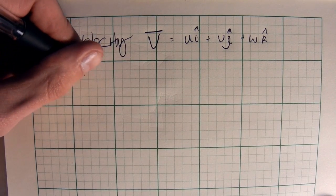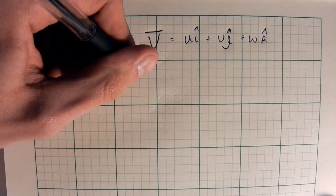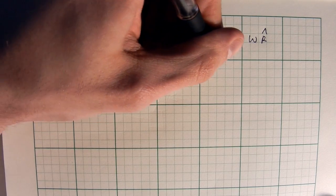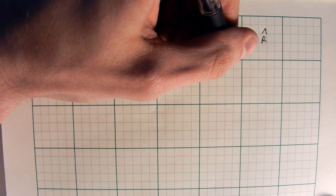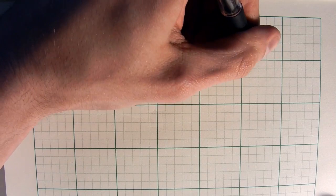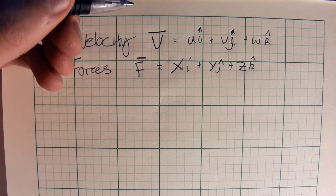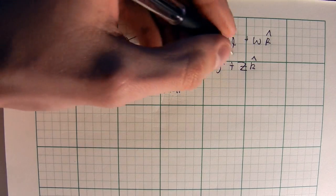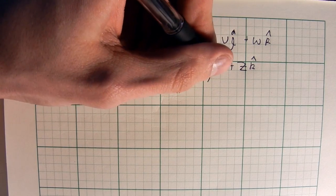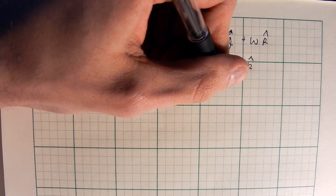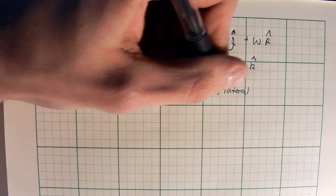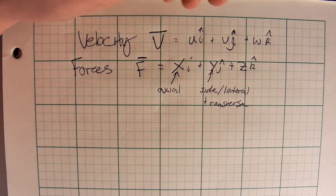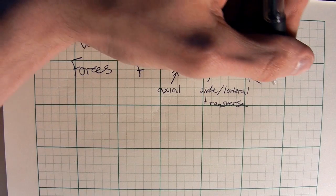The second one we have is forces, denoted as F-bar, written as uppercase X in the i-hat direction, plus uppercase Y in the j-hat direction, plus Z in the k-hat direction. This X is also known as the axial force. This Y has a bunch of names — we can call it the side force, lateral force, or transverse force. And then Z is known as the normal force.